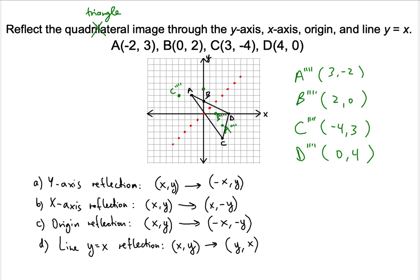D quadruple prime is 0 comma 4. That's the same distance from this line as the original D — if you choose a point on the reflection line, it will be 4 units away from both D and D quadruple prime. Think of component 1 and component 3 in right triangles on both sides — same distance. Any point we choose will be equidistant from the line between D quadruple prime and D original. The hypotenuses must be the same length, confirming this is a proper reflection through the line y equals x.